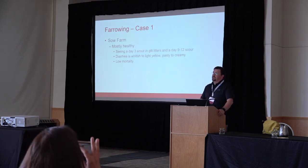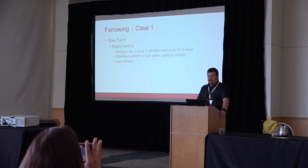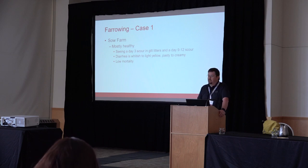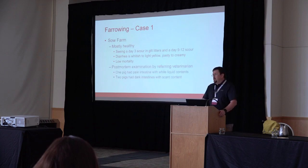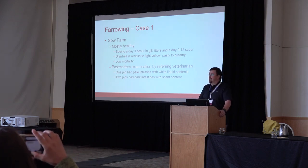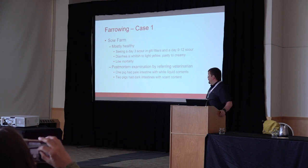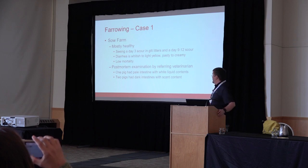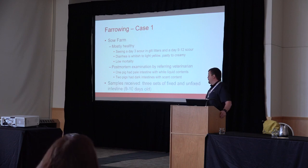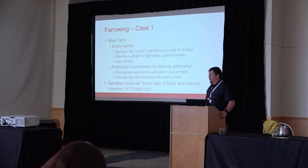For farrowing case one, we have a sow farm that is doing okay for the most part, but they have some early scours at day three in some litter mates, and a more consistent day nine to twelve scour that's been low mortality but high morbidity, with whitish to light yellow, pasty to creamy feces. Post-mortem examination was done by the veterinarian on the farm. They did three pigs — one had pale intestines with white liquid content, and two had dark intestines with scant contents. We received three sets of fixed and unfixed tissues from nine to ten day old piglets.